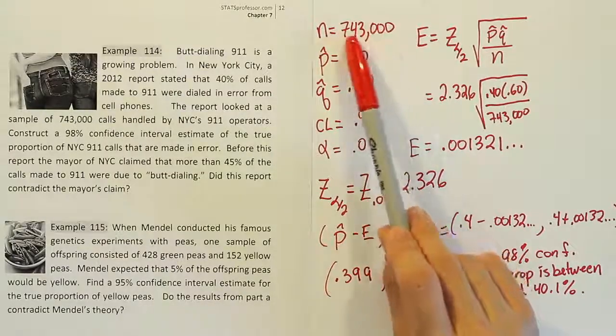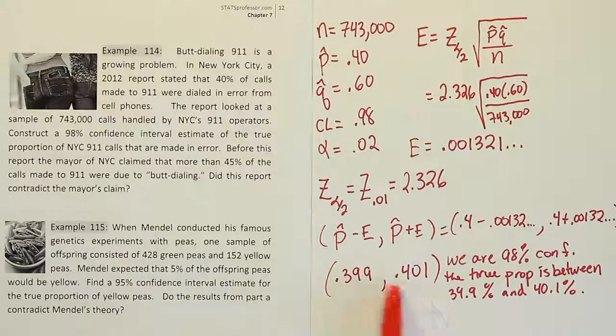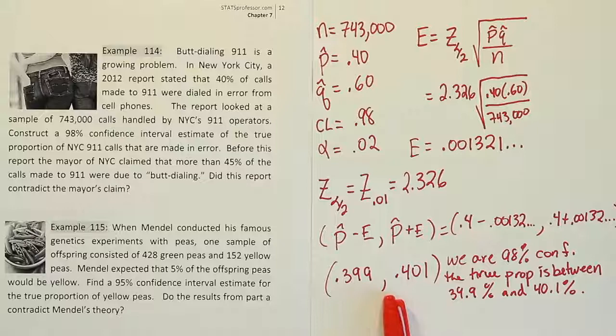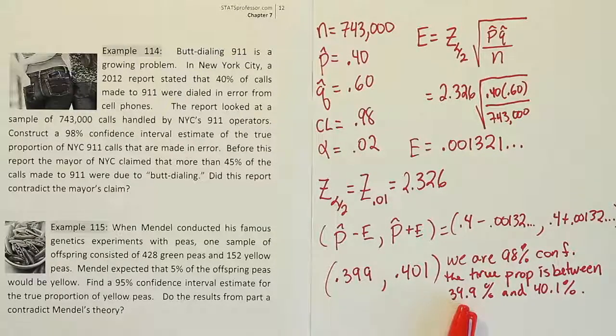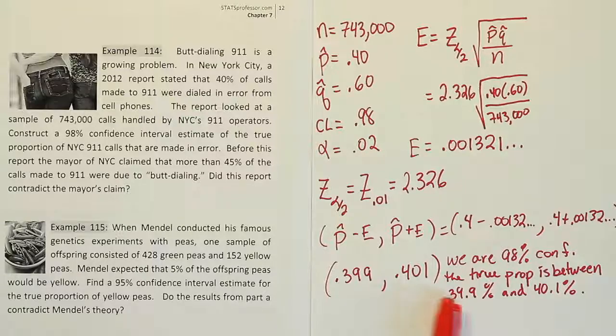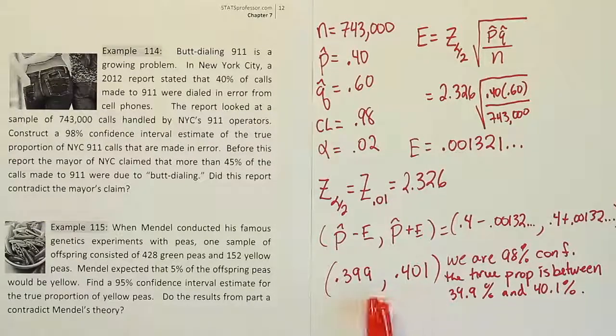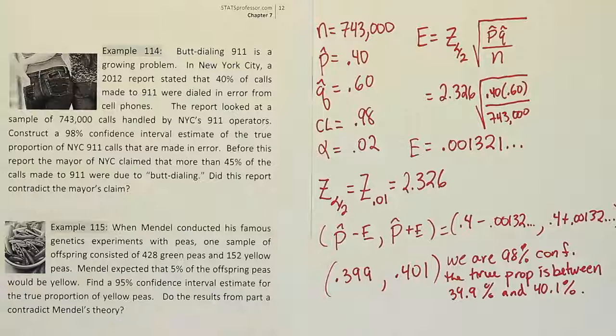But the true proportion is about 40%. The reason why this number is so close to our sample value is because the sample size was so large. That's a huge number. And so this number basically captures what's probably going on, at least at the moment, in New York City. And so the mayor's claim of it being more than 45% is a little high. So basically, he's misspoken by overstating how many of them are erred. However, it's still a lot of errors. It's just not quite as high as what he said. He said more than 45%, so it's just too high.